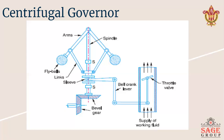In this case, the extra power output is provided to balance the increased load. When the load on the engine decreases, the engine and the governor speed increases, which results in an increase of centrifugal force on the balls. Thus the balls move outwards and the sleeve rises upward. This upward movement of the sleeve reduces the supply of working fluid, hence the speed is decreased and the power output is reduced. This is the working principle of the centrifugal governor. Thank you.